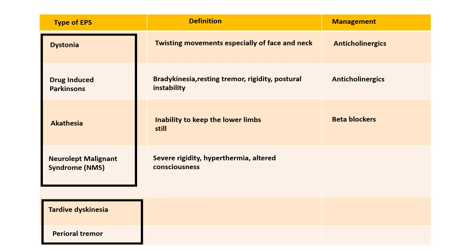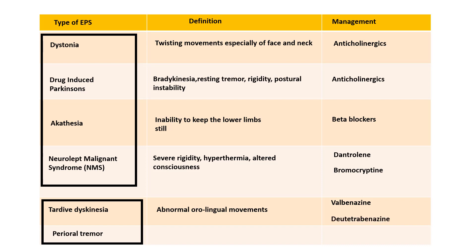Neuroleptic malignant syndrome refers to severe rigidity, hyperthermia, and altered consciousness; it is treated with dantrolene and bromocriptine. Tardive dyskinesia refers to abnormal orolingual movements that can be socially very inappropriate. Treatment is very challenging, but newer drugs have entered the market including valbenazine and deutetrabenazine. Perioral tremors are sometimes referred to as rabbit syndrome.